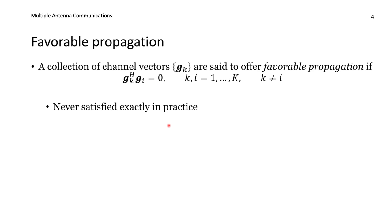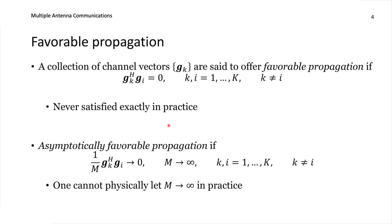Unfortunately, exact favorable propagation is never satisfied in practice. But there is an asymptotic version called asymptotically favorable propagation: we take the inner product of two different channel vectors, normalize by the number of antennas M, and this quantity can converge to zero asymptotically as we add more antennas. As the array becomes larger, the beam width becomes smaller and signals are directed into smaller parts of space. So if users are not at the same locations, it makes sense that adding more antennas makes them easier to separate.